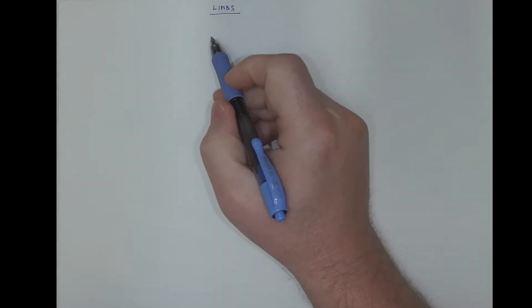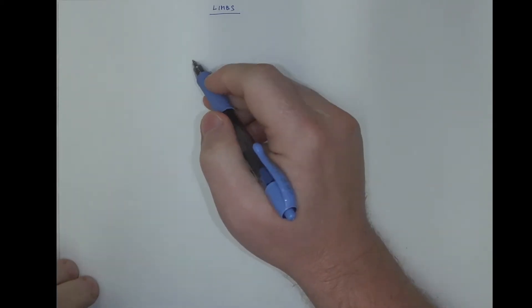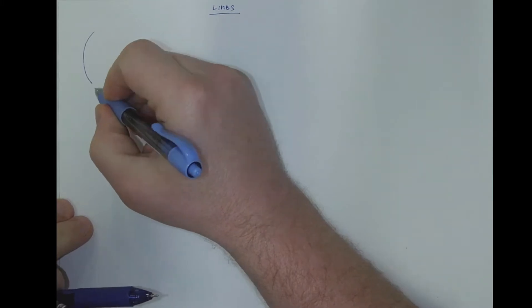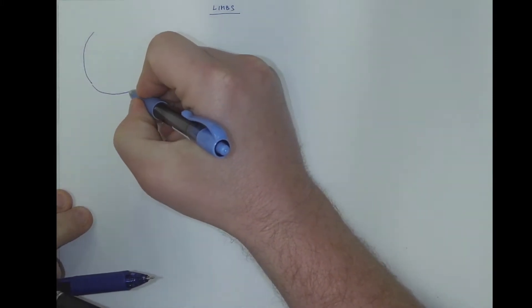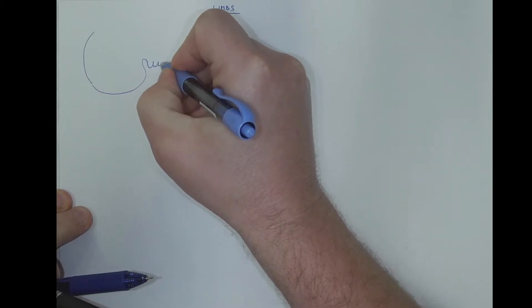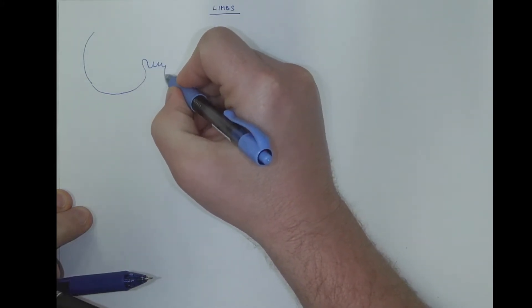The limbs start to develop during the fourth week. This will be stomodeum, the first, second, third, fourth branchial arc.